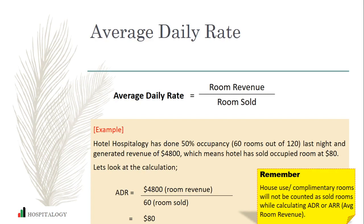So let's take an example. Hotel Hospitality did 50% occupancy, which is 60 rooms out of 120, and the hotel generated revenue of $4,800. That means $4,800 divided by 60 rooms, which comes to $80 per occupied room. Remember, when we calculate ADR, we always exclude house use and complimentary rooms.